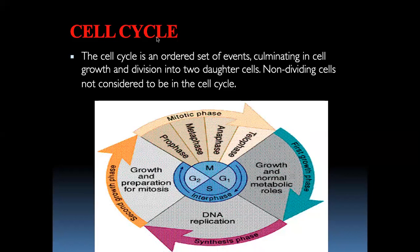Some cells continuously divide - like cells of the epidermis, dermis, palm, foot, oral cavity, and vaginal cavity. These keep on dividing because there is continuous wear and tear and continuous new cell formation. So we have various types of cells: some do not divide at all, some divide only when required, and some keep on dividing.